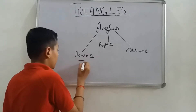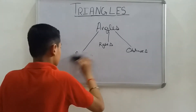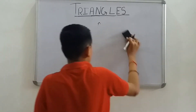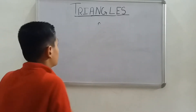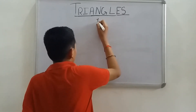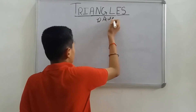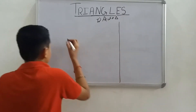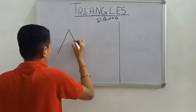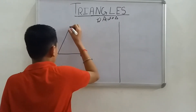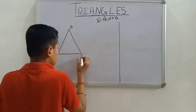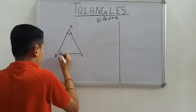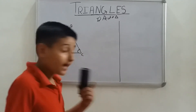First we will discuss about the acute angle triangle. In an acute angle triangle with points A, B, and C, all the angles are less than 90 degrees.